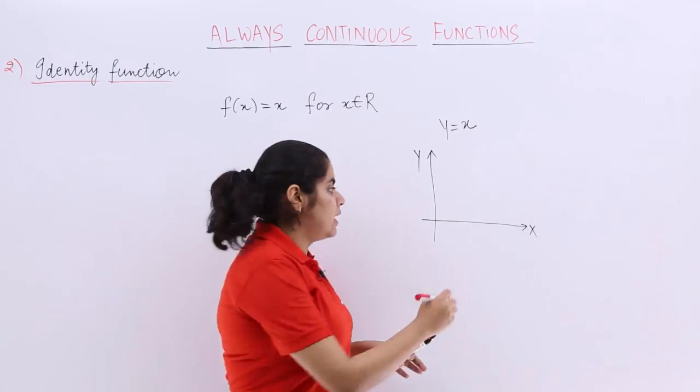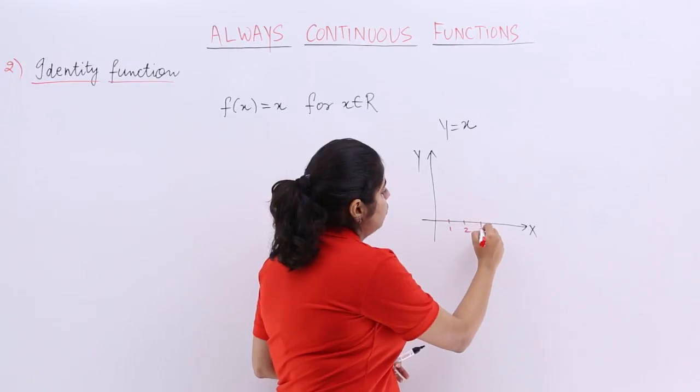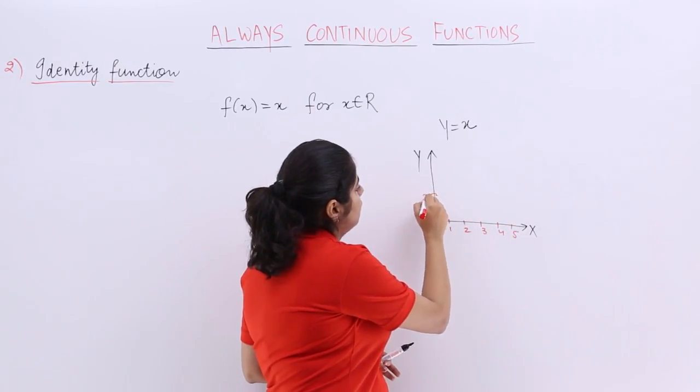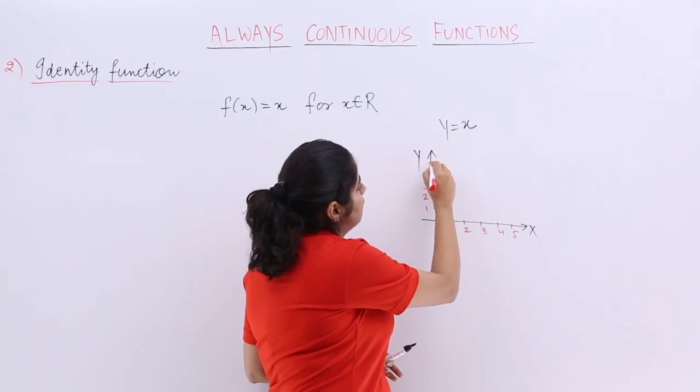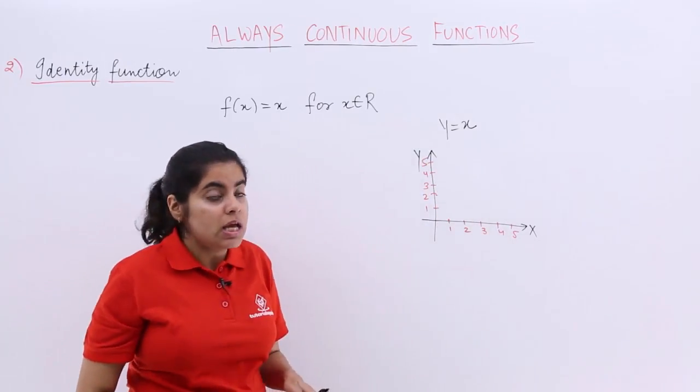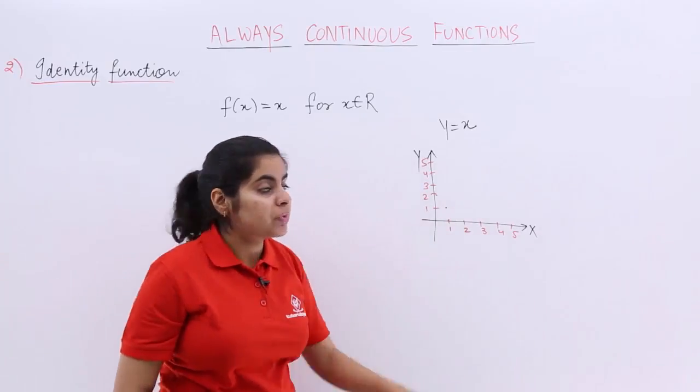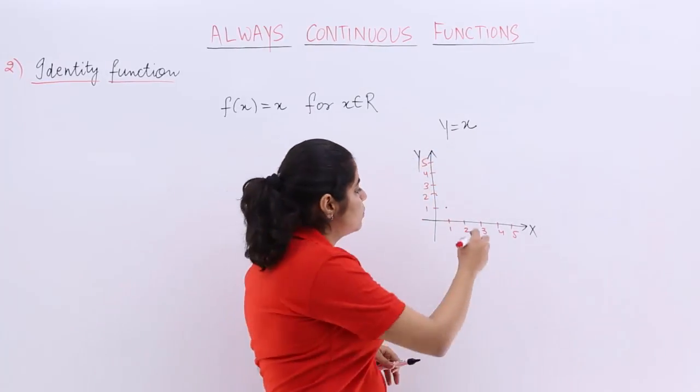If x is 1, y is 1. We have 1, 2, 3, 4, 5 here and here. When x is 1, y is 1, so the point is (1,1). When x is 2, y is also 2 because they are equal.